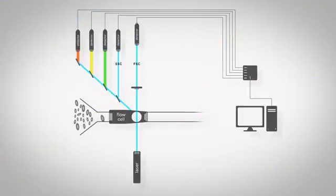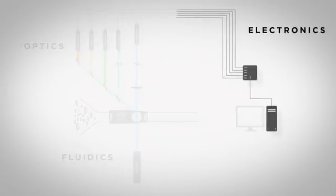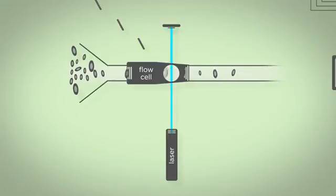A flow cytometer is made of four primary components: fluidics, optics, electronics, and software. The fluidic system creates a stream of single cells that pass through the chamber, also known as hydrodynamic focusing, where they are interrogated by laser light.